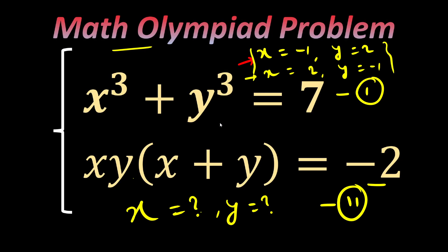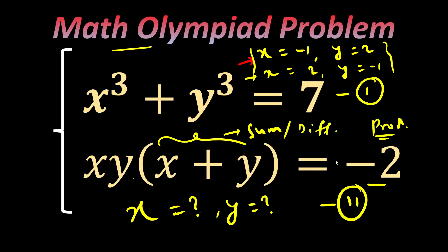I hope you understood the method. Usually in such questions, we try to find two relations — one involving the sum (x + y) and another involving the product (xy). Once we have both, we can form a quadratic equation and solve for x and y. In most such simultaneous equation problems, you eventually need to find the sum, difference, or product of the variables. If you know a better method, please put it in the comments — we can have a discussion. Thank you.